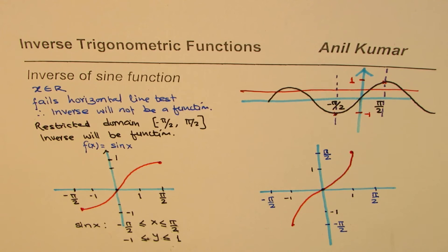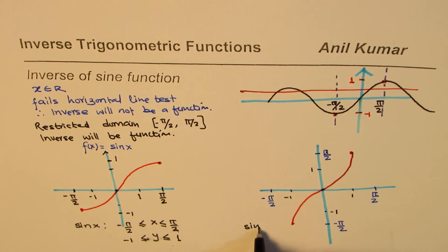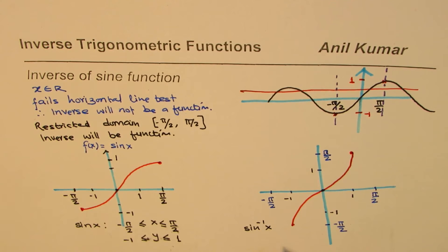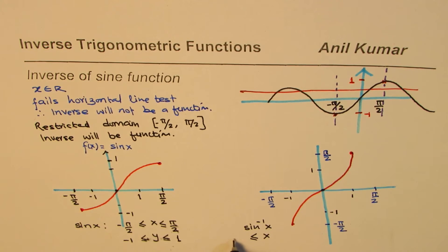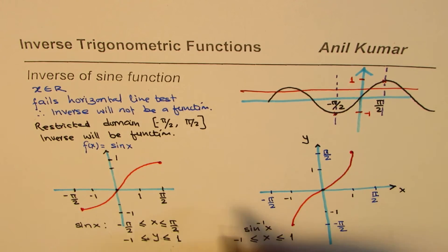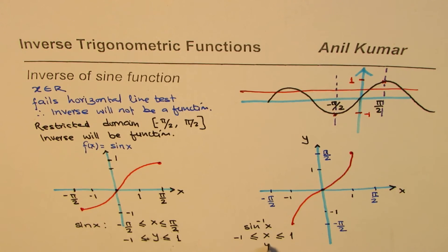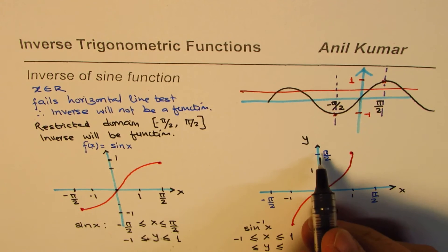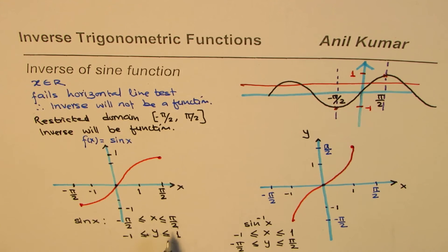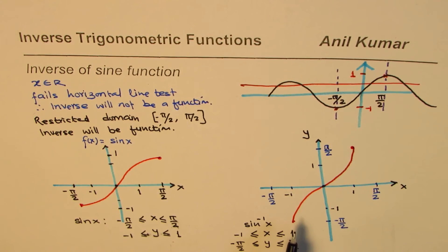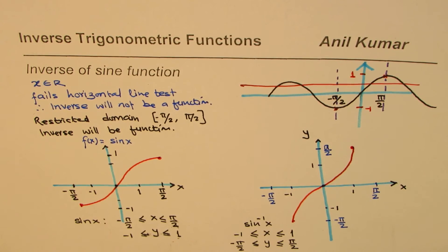As you can see, this is sine inverse x. In this particular case the domain will be x within minus 1 and plus 1, and the y value will be between minus pi by 2 to plus pi by 2. If you compare, you can see that for the inverse function the domain and range flip — the domain becomes the range and the range becomes the domain. So that is as expected.